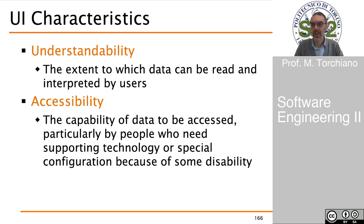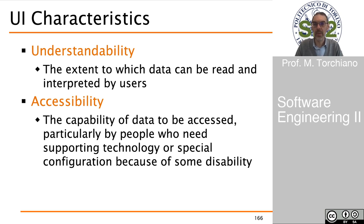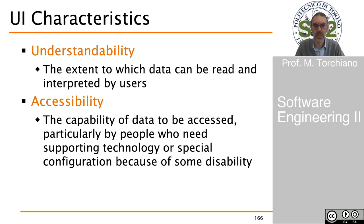There are a couple of characteristics concerning the user interface — how data is presented to the user: understandability and accessibility. Understandability is how well we can allow our user to read and interpret the data in the correct way. Accessibility is the capability of the data to be accessed by people who may need other technology or special configuration; in general, accessibility is related to the presence of some disability in the user and the capability of the system to provide data to these people as well.